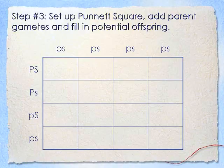Across the top is just little p, little s, because from that second parent that was my only possible combination for a gamete, and it's going to be little p, little s for all four columns. On the side with the other parent, I had four different gamete choices: big P big S, big P little s, little p big S, and little p little s. Those are all my possible combinations, and I'll line them up on the side.